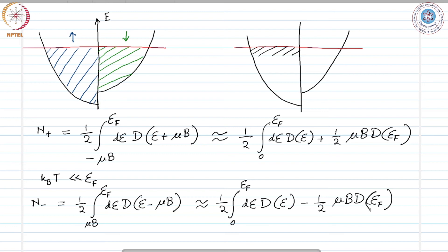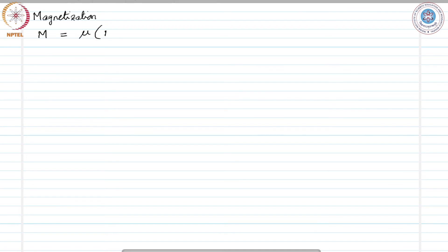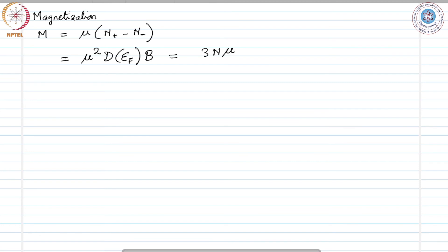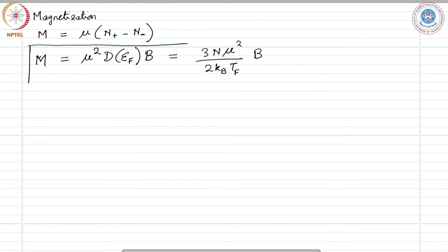If we have this, then the magnetization would be given as M equals μ times (n+ minus n−). If we calculate this, it turns out to be μ² times the density of states at the Fermi energy times the magnetic field, which is equal to 3n μ² over 2 k_B T_F times the magnetic field. This is the expression for magnetization using the density of states for the free electron model.